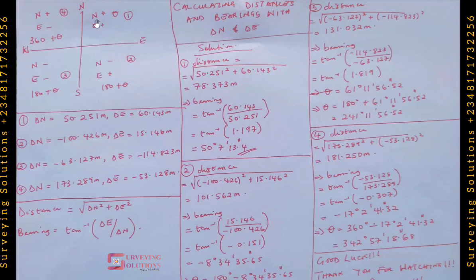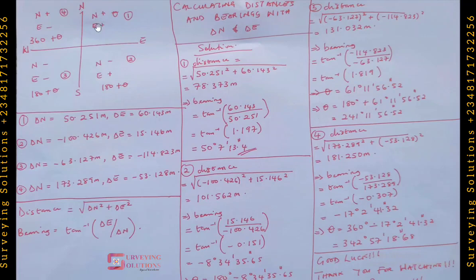On the first quadrant, northing is positive and easting is positive — because it's upward and to the right from the origin. From the origin upward is your northing, and from the origin to the right is your easting. So for quadrant one, northing is positive and easting is positive.